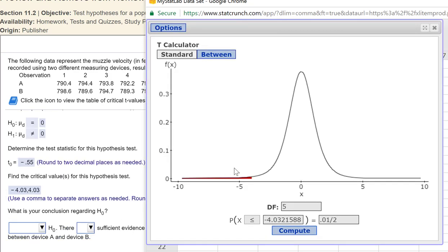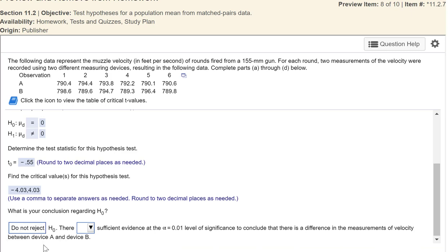Our test statistic, negative 0.55, falls like right around in here. So it is not in the red region at all. So we do not reject H0. There is not enough evidence to conclude there is a difference in the measurement of the velocity between these devices.